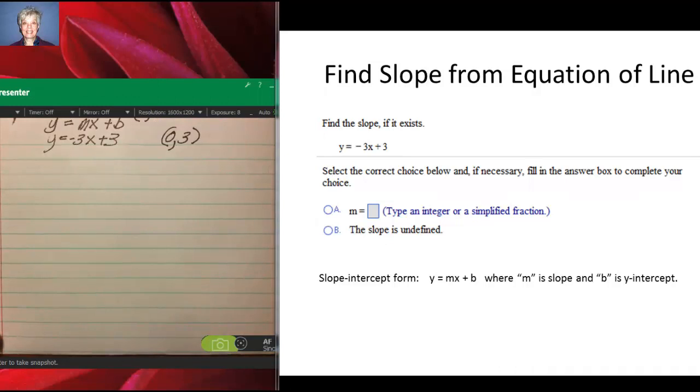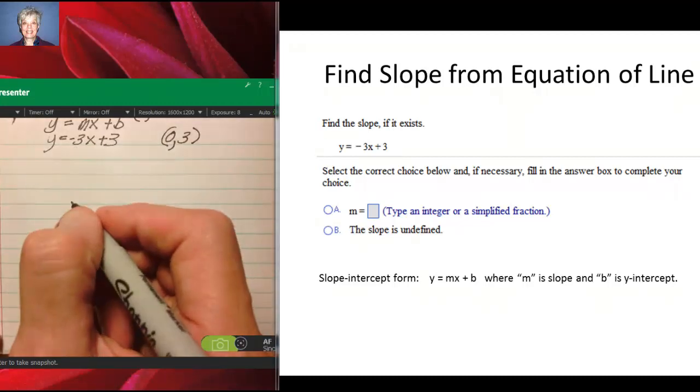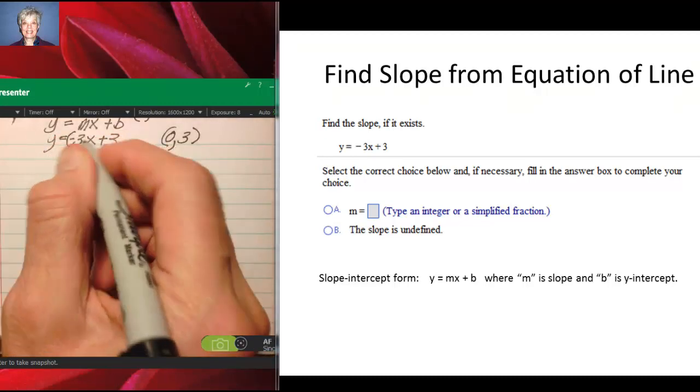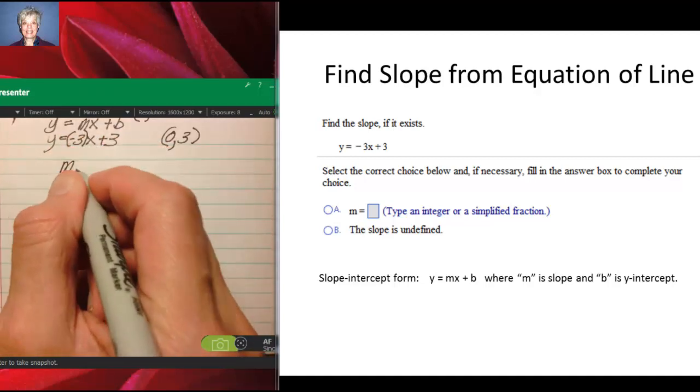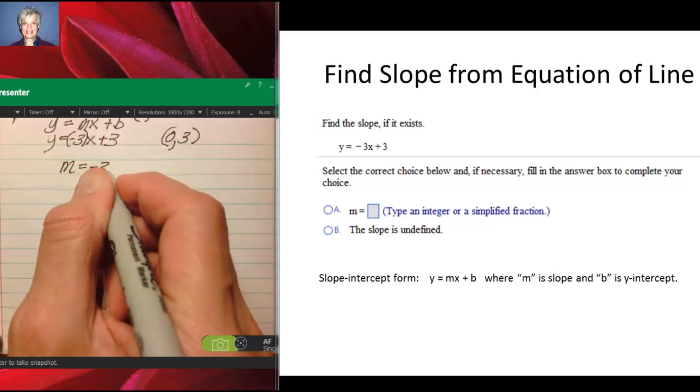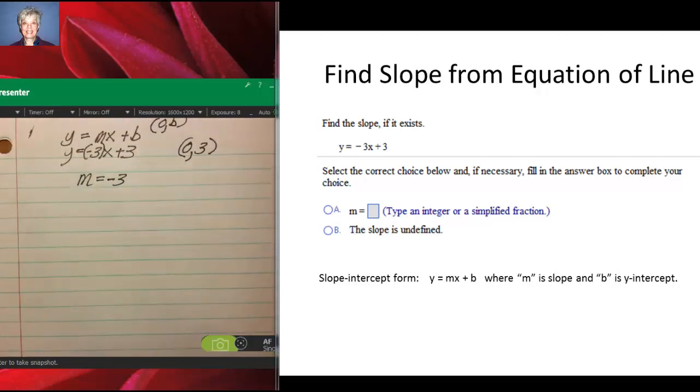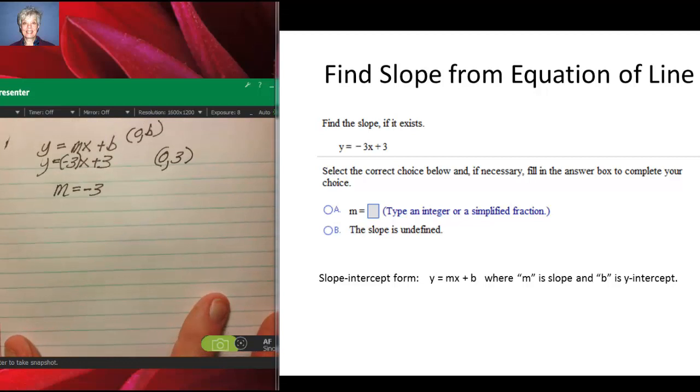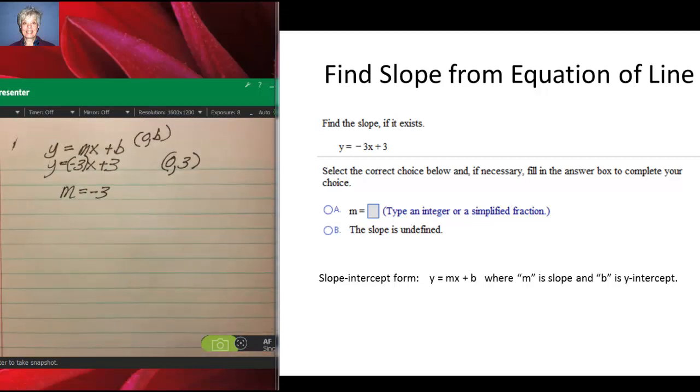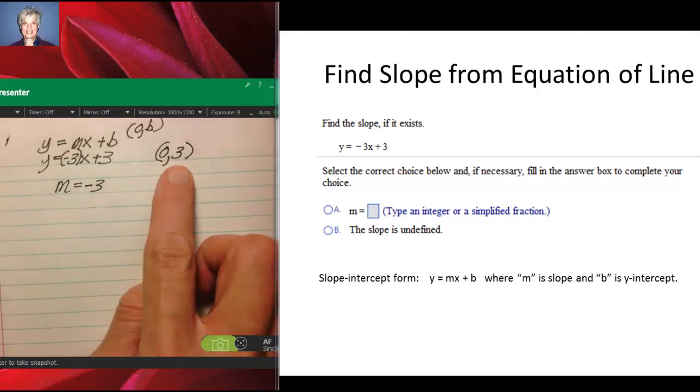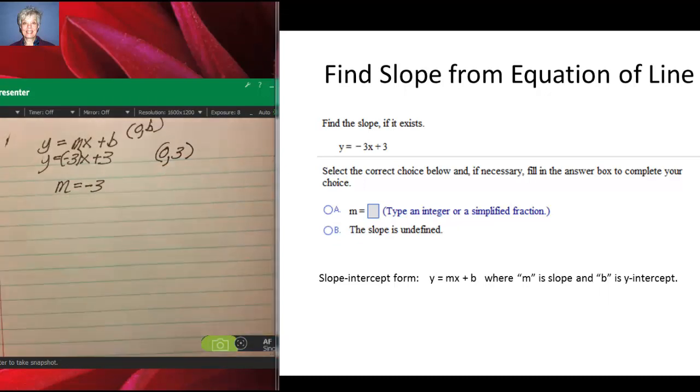So we're being asked, what is the slope of this line? I'll tell you right now, it's the number in front of x, which is -3. So m is -3. Whenever you have a line in y equals form, you have it in slope-intercept form. The number in front of the x will be the slope of the line, and the number at the end will be the y-coordinate of the y-intercept. Remember, the y-intercept is a point.